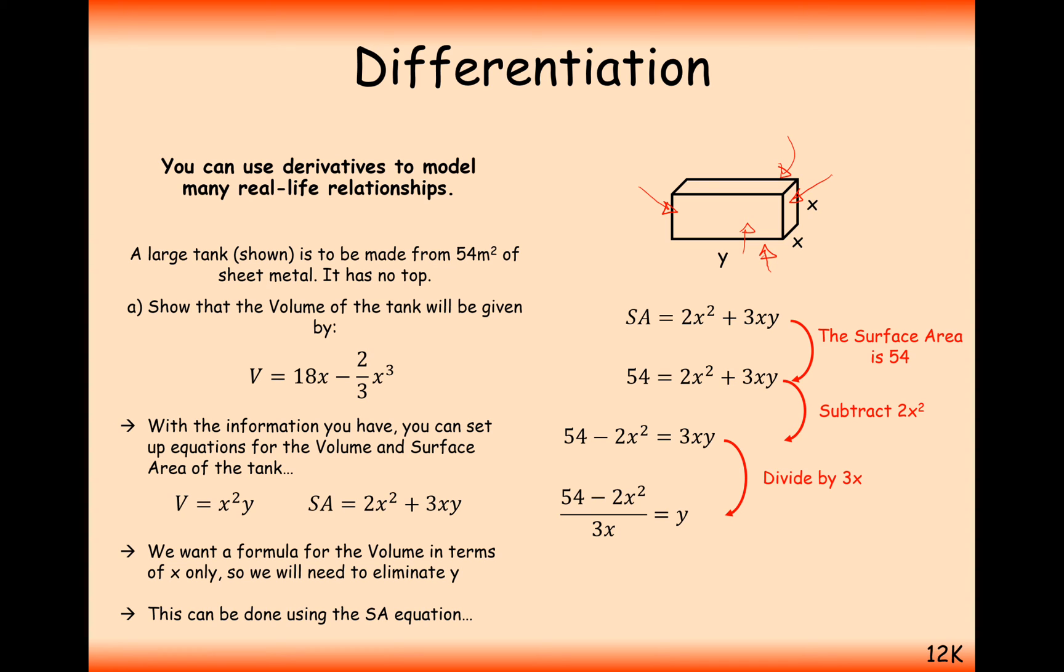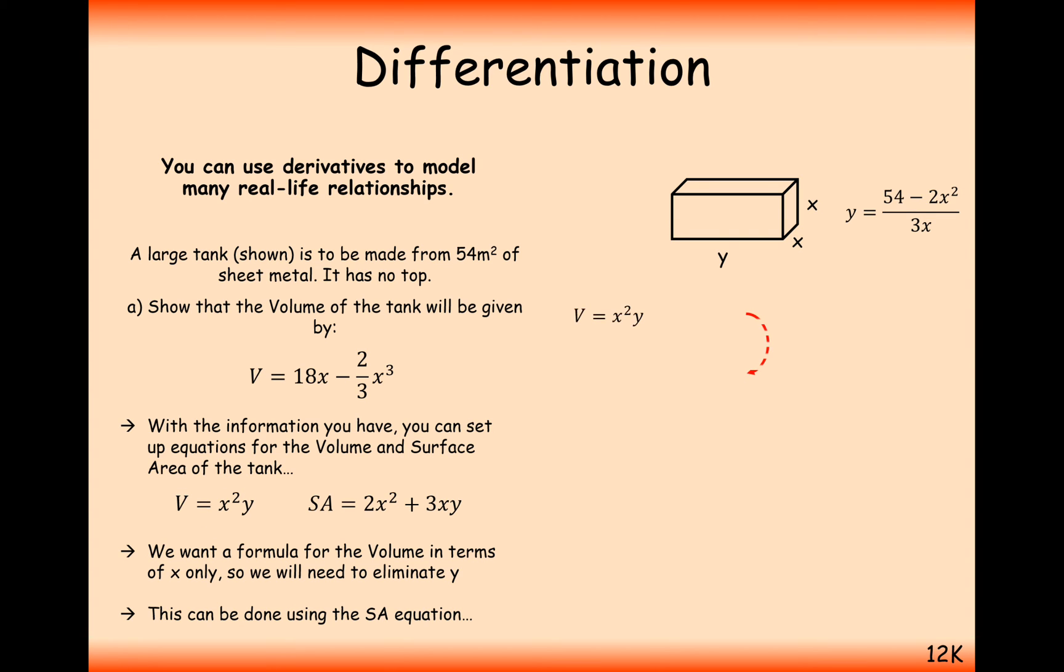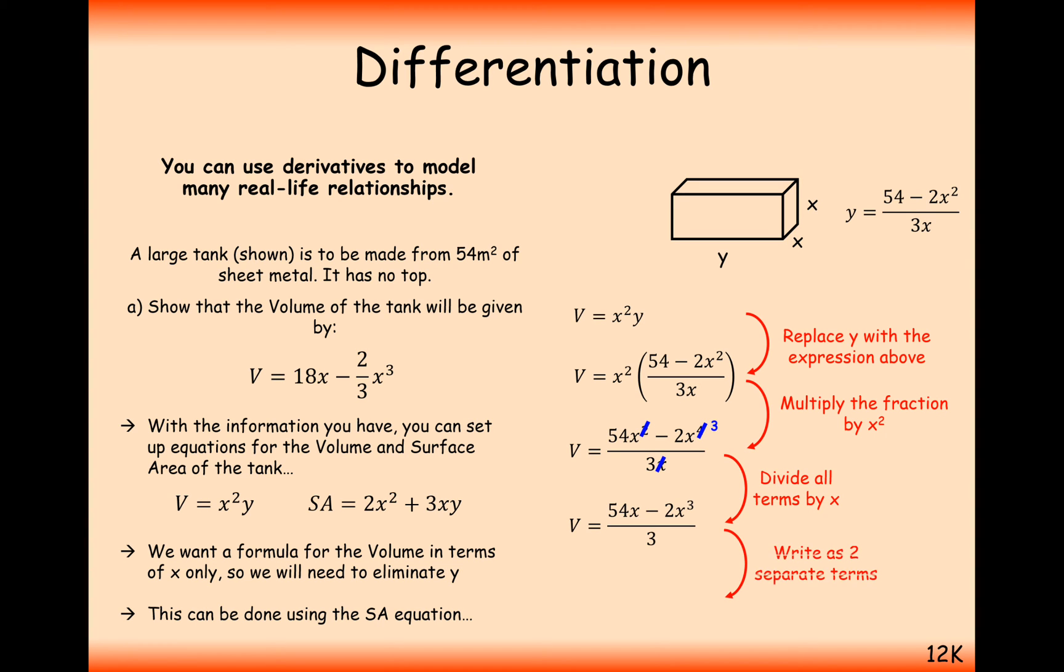And now what we can do is bring in the formula for the volume and substitute this expression in here. So this is a key feature of these types of questions. They'll give you a surface area and a volume, or maybe just one, and they'll ask you to rearrange to make a letter the subject and then substitute it into the formula of the other surface area or volume question. So what we can do here now is expand the brackets and simplify our fractions. We've got to try and make it look like our final answer here, v equals 18x minus 2 thirds x cubed.